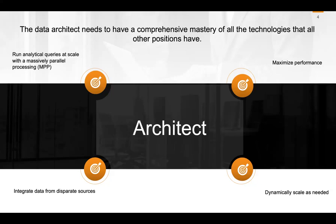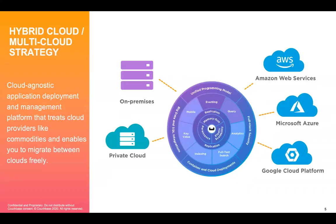Data architect — as you can probably tell, these positions overlap. An architect is basically a generalist with similar concerns to the other data personas, but at a more comprehensive level. Architects want systems that are highly scalable, want maximum performance, and want to be able to integrate data from disparate sources while minimizing costs. To summarize: Couchbase is a top-performing NoSQL database because of our memory-first architecture. We provide tools to easily ingest and query data, support for all major languages via SDKs, ODBC and JDBC drivers, an intuitive UI, and all of this functionality in the cloud as a cloud-native DBaaS offering.